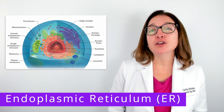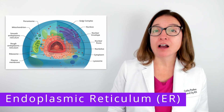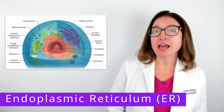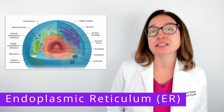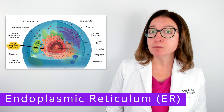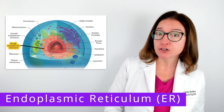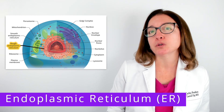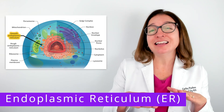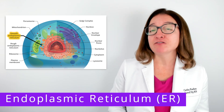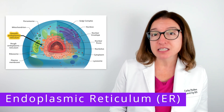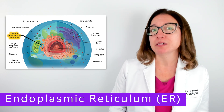Now let's talk about the endoplasmic reticulum, or ER. The ER consists of interconnected tubules and flattened sacs called cisternae. The rough ER is studded with ribosomes on the outer surface and is involved in protein synthesis. The smooth ER does not contain any ribosomes and is involved in lipid synthesis, the detoxification of substances, and carbohydrate metabolism.